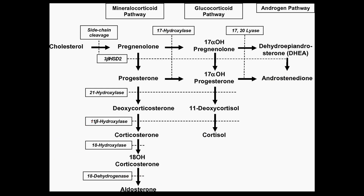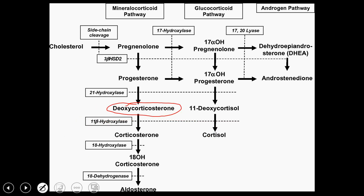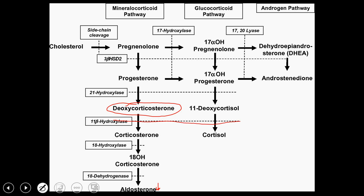The last one we need to deal with is 11-beta-hydroxylase deficiency. This is a little bit rarer, but because of that it's more high yield. If we knock out 11-beta-hydroxylase, we're not going to have production of cortisol — because this entire pathway stops here — but we are going to have production of deoxycorticosterone. The reason this is so important is because deoxycorticosterone does have mineralocorticoid activity. So it's not a strong mineralocorticoid, but you will still have increased mineralocorticoids. Important to note: you're going to have low aldosterone because the pathway stopped right here, but the patient will still have increased blood pressure because of the mineralocorticoid activity of deoxycorticosterone.